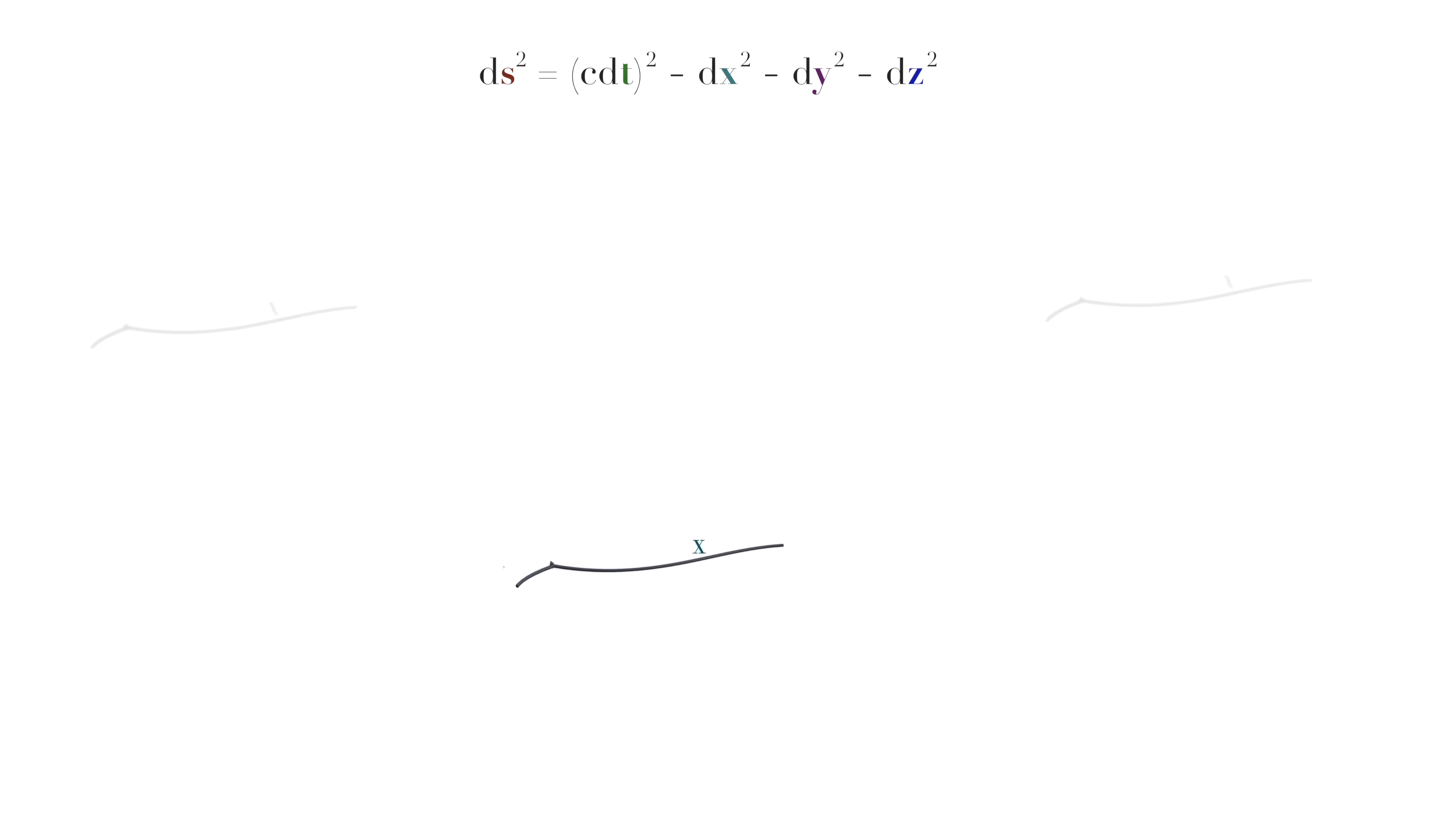Now, how do we know this? Well, just look at the units. The x, y, and z axes of our manifold, being our spatial dimensions, all have units of distance.